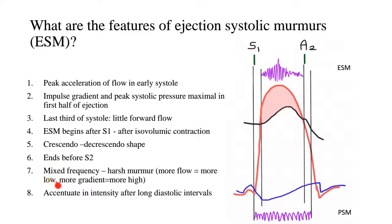The frequency of ejection systolic murmur is mixed. When there is more flow there are more low frequencies, and when there is more gradient there are more high frequencies. In an ejection systolic murmur due to aortic stenosis, the entire cardiac output passes through that stenosed valve, so the frequencies will be low; and when the aortic stenosis becomes very severe, the gradient becomes higher and the frequencies would also be more. So there is essentially a mixture of low and high frequencies, which contributes to a harsh ejection systolic murmur.